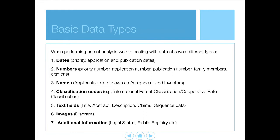Fifth, we have free text fields: the title, the abstract, the description, the claims, and for example DNA sequence data. Sixth, we have images, typically diagrams. And finally, seventh, we have a set of additional information such as legal status information or information in public registries linked to patent databases.